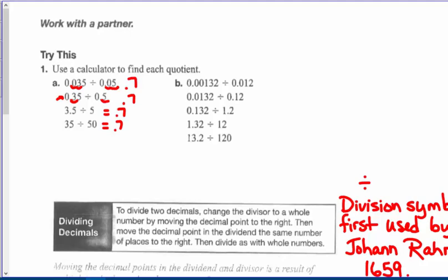132 hundred-thousandths divided by twelve-thousandths: if I move the decimal three places, I have 1.32 divided by 12. I know my twelfths tables — 12 times 11 gives me 132 — but I need two decimal places since I had two decimal places in the dividend. I'm dividing 1.32 by the whole number 12, so the answer is eleven-hundredths.